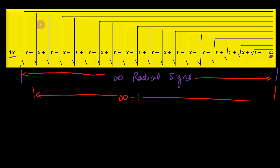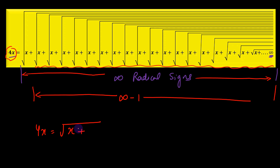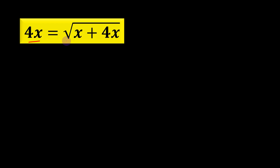Therefore, the value of this expression is the same as the value of the original expression. That is, this whole quantity over here will also be equal to 4x — the original quantity. Thereby we get the equation that 4x equals the square root of x plus this whole expression, which can be replaced by 4x only. So we get the simplified equation: 4x equals the square root of x plus 4x.